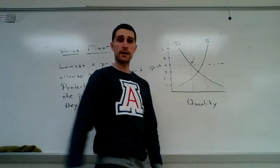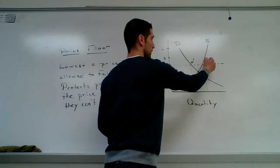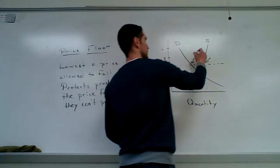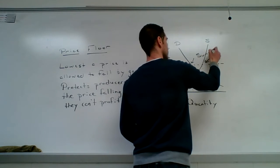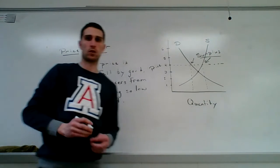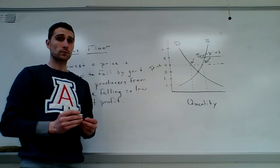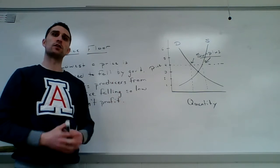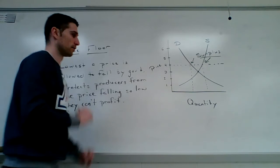People are demanding a lower quantity than is available. What do we call that? A surplus. So, what ends up happening with the price floor is it becomes inefficient because it creates a surplus of products.